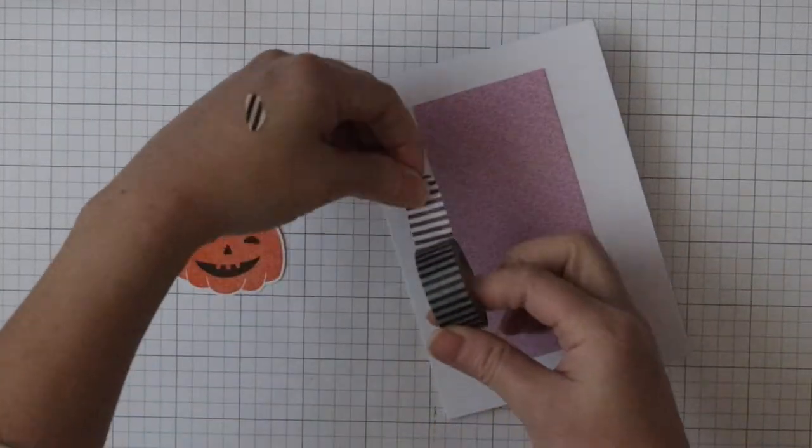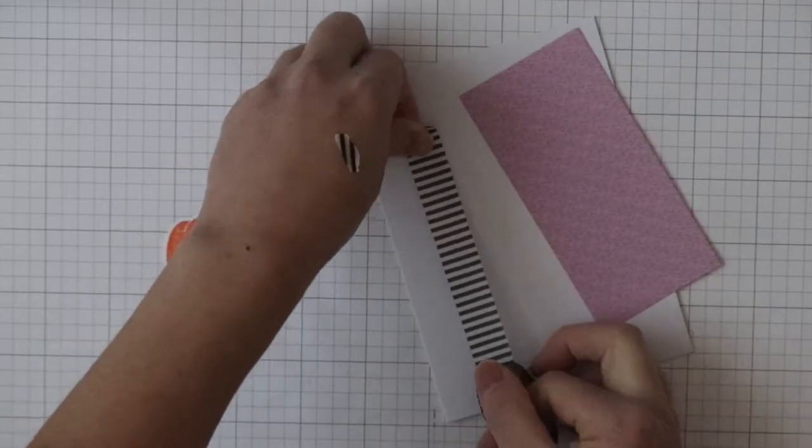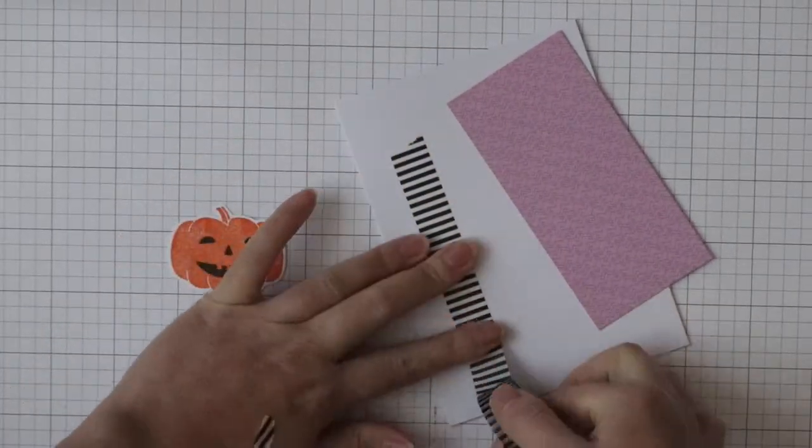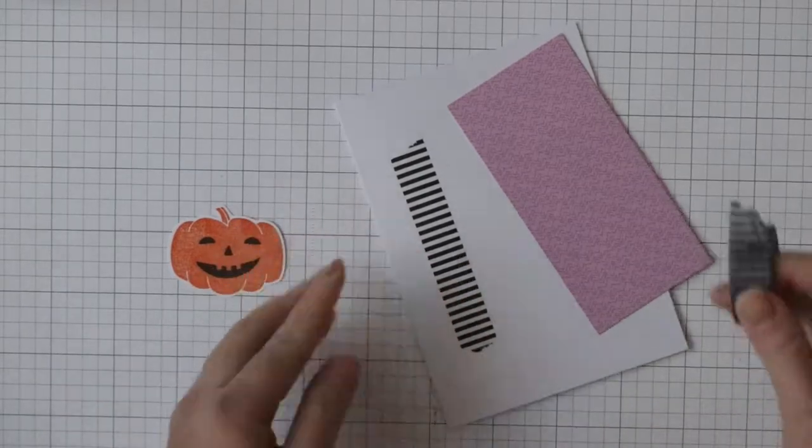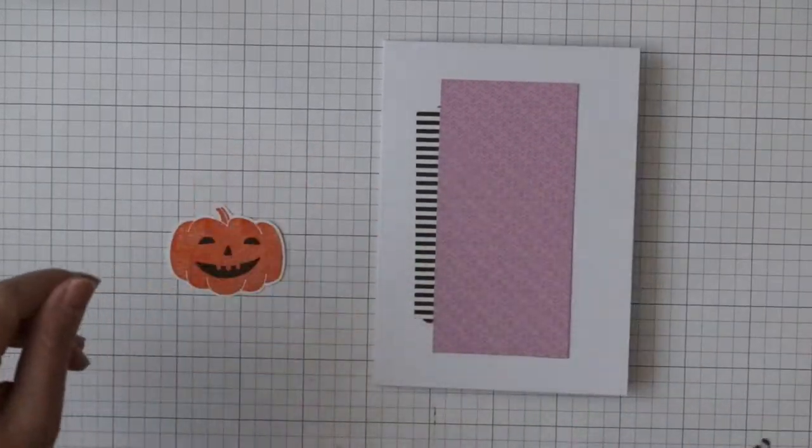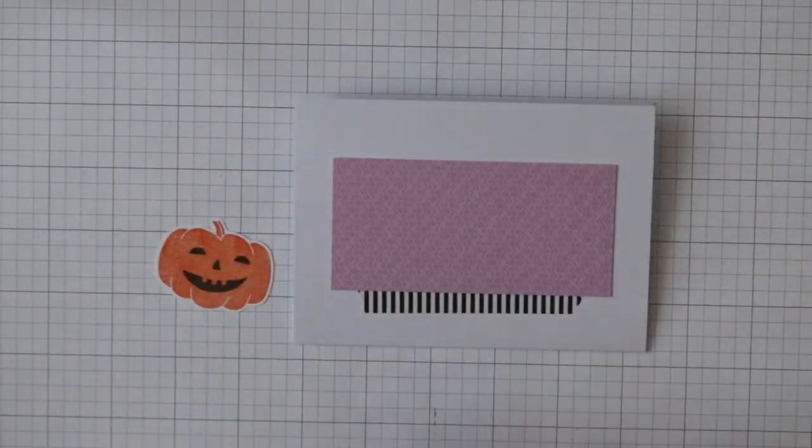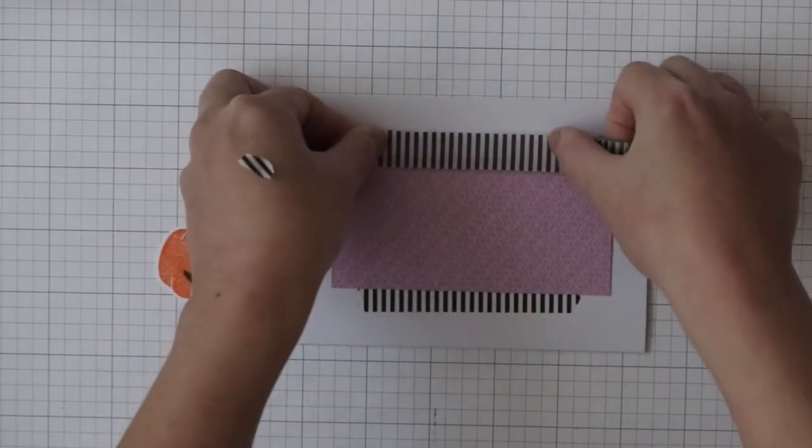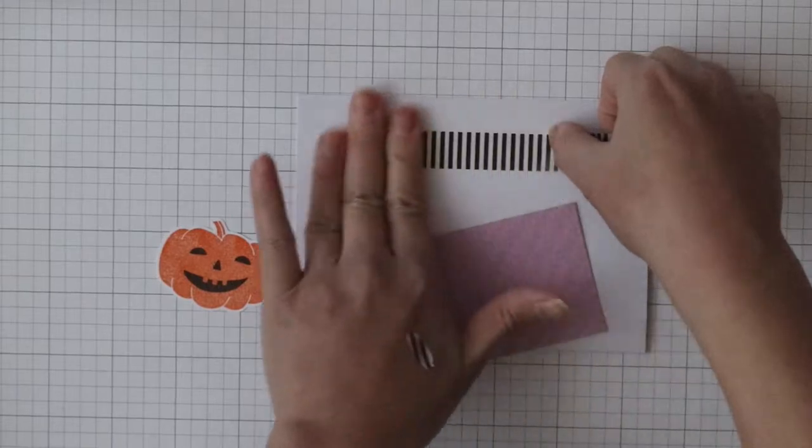Then I added some washi tape. Didn't really matter if it was straight or not. And I just tore the ends.